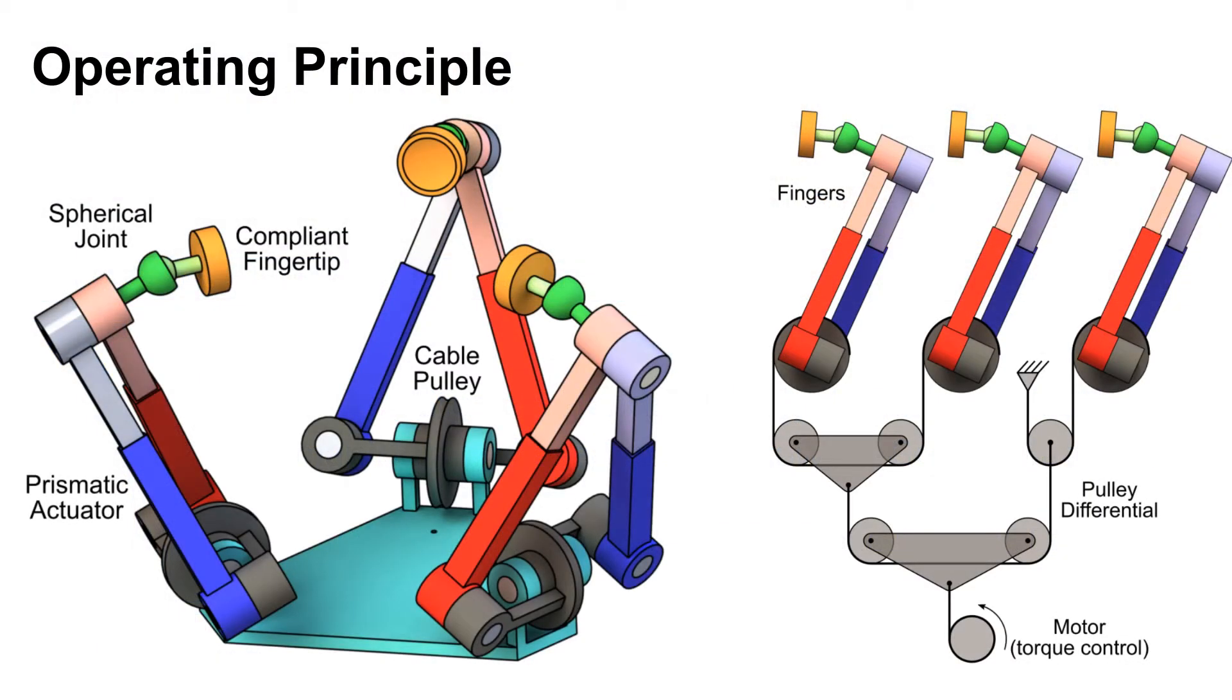The mechanism of the hand, presented here in schematic form, includes three fingers, each consisting of a revolute joint at the base.